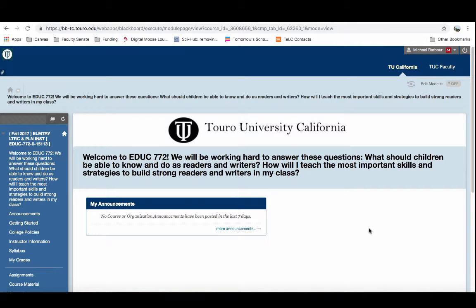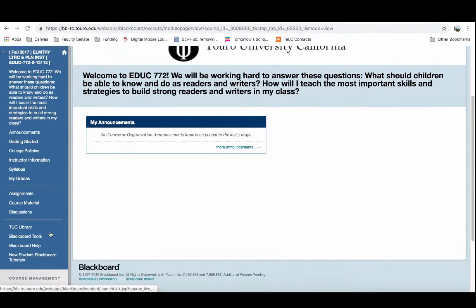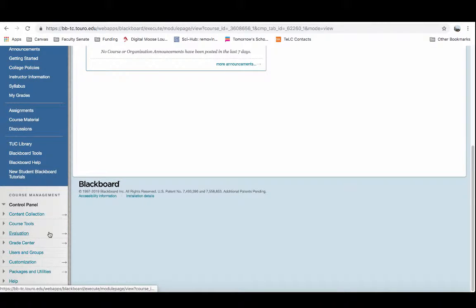The first thing you want to do is go to one of your courses in Blackboard and scroll down on the left-hand menu to the Grade Center.